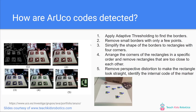So how are these codes actually detected from a computer vision perspective? On the left side we have the breakdown of the process. First, a technique known as adaptive thresholding is used to find the borders of the image — at this point we don't know where the codes are. We then remove small borders with only a few points and simplify the shape of the borders to only rectangles with four corners. We then arrange the corners of the rectangles in a specific order and remove rectangles that are too close to each other. Finally, we remove the perspective distortion to make the rectangle look straight.